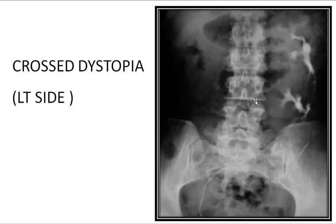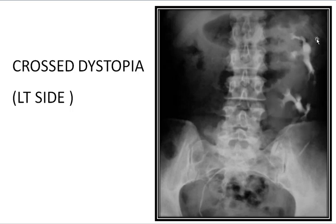Another form of renal shadow distortion shows the pelvicalyceal system with the renal pelvis lateral and calyces medial — the left kidney is malrotated. On the right side there is no right pelvicalyceal system, but another shadow appears much like a pelvicalyceal system separate from the upper one. This is a case of crossed dystopia — the right kidney has crossed the midline to the other side and lies below the left kidney.